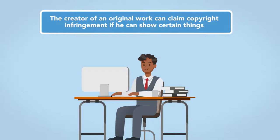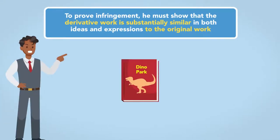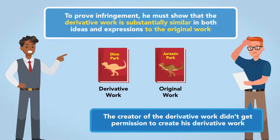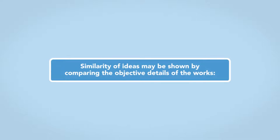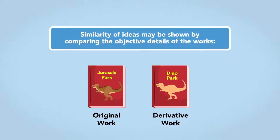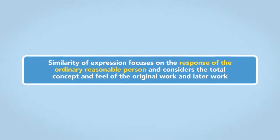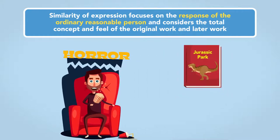The creator of an original work can claim copyright infringement if he can show certain things. To prove infringement, he must show that the derivative work is substantially similar in both ideas and expressions to the original work, and that the creator of the derivative work didn't get permission to create his derivative work. Similarity of ideas may be shown by comparing the objective details of the works — plot, theme, dialogue, mood, setting, and characters. Similarity of expression focuses on the response of the ordinary reasonable person and considers the total concept and feel of the original work and later work.